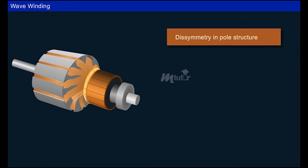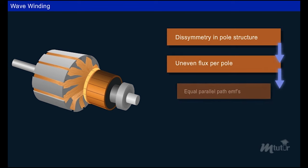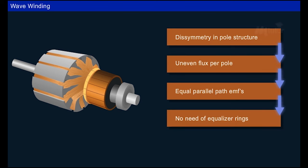Therefore, even in the presence of unequal flux distribution due to dissymmetric poles, the EMF in both parallel paths will be the same, as both coils are affected equally by all the pole pairs. Thus no equalizer rings are required in wave windings.